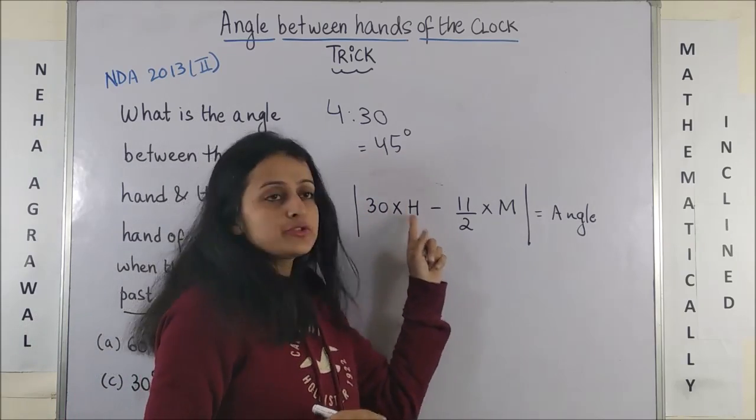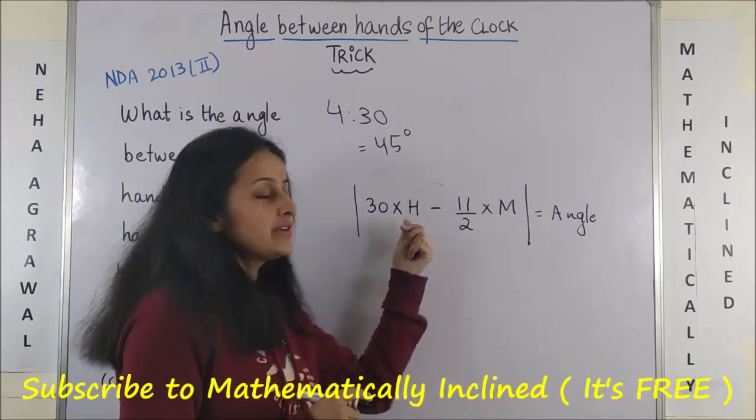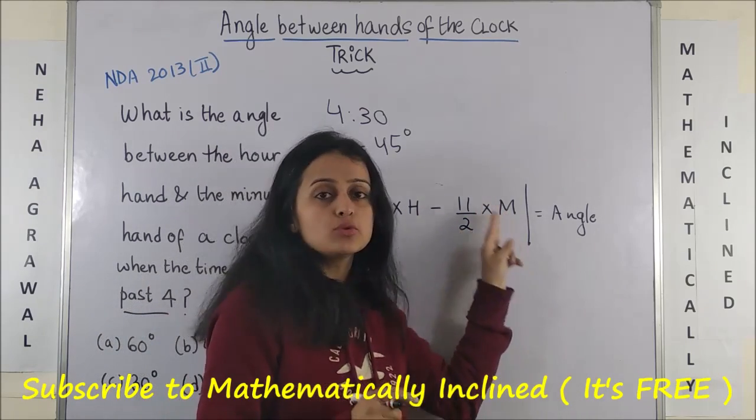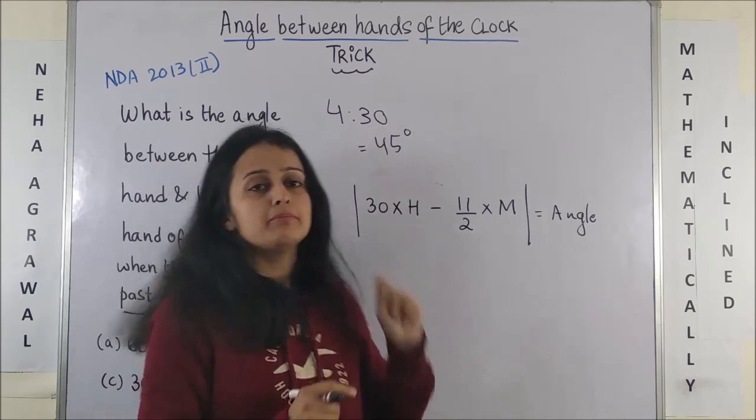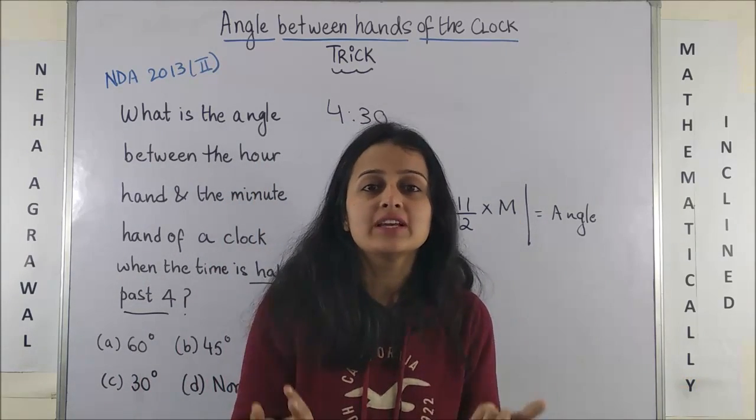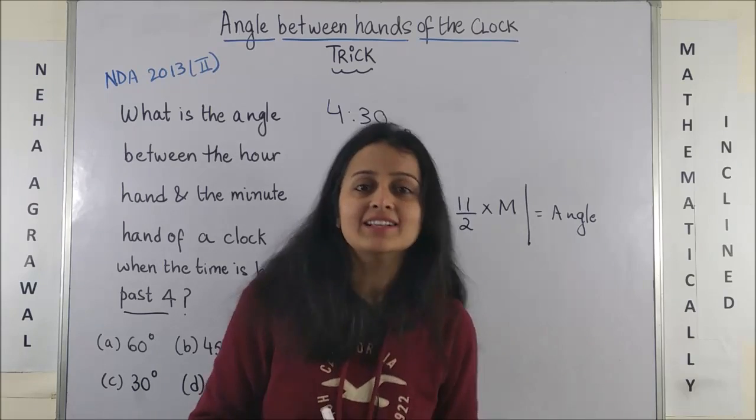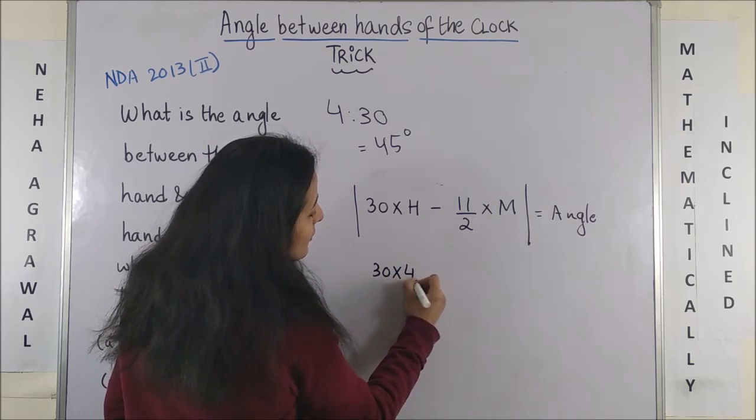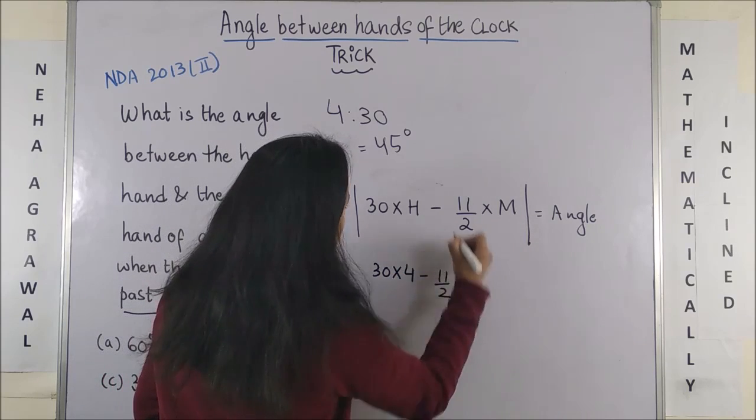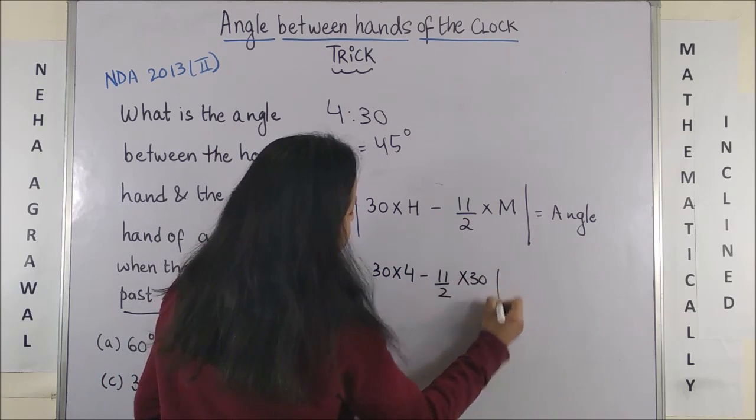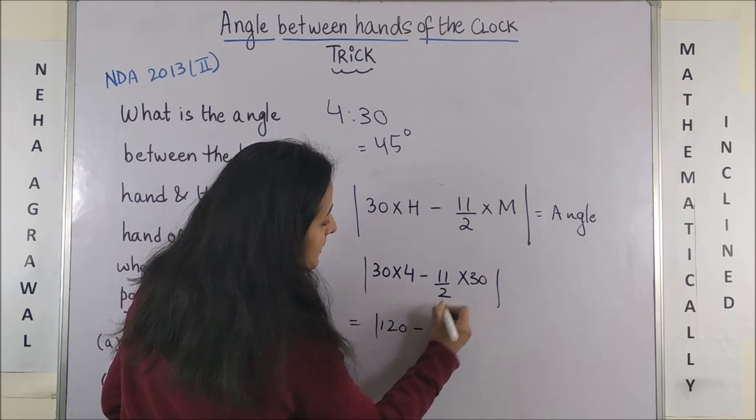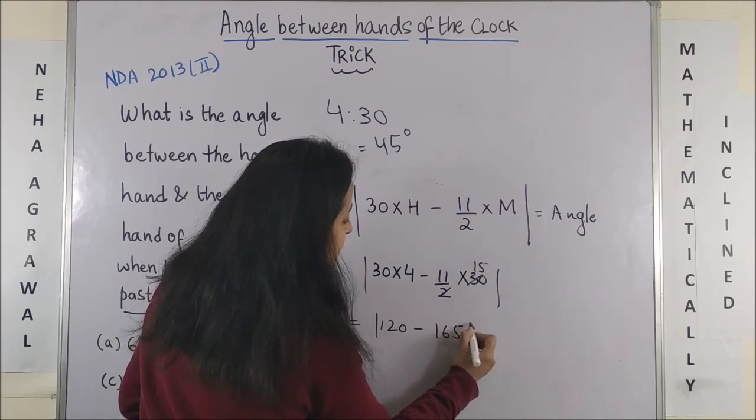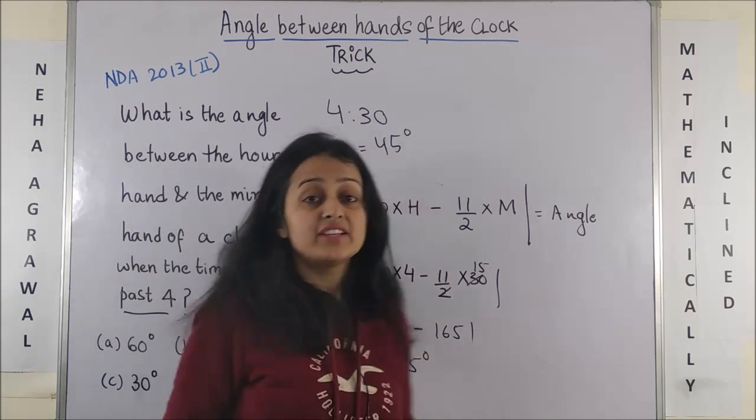So the formula goes like this: it says 30 into whatever is the time in hours, that you multiply minus 11 by 2 into whatever is the time in minutes. And why absolute value? Because we are only talking of the angle here. So for instance, this one: 30 into 4 minus 11 by 2 into 30. So this is 120 minus 11 into 15 will give us 165.